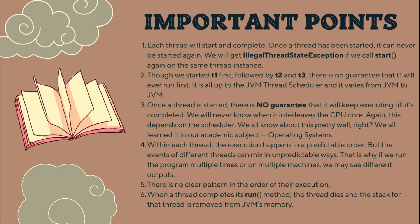Within each thread the execution happens in a predictable order, but the events of different threads can mix in an unpredictable way. That is why if we run the program multiple times or on multiple machines, we may see different output — there is no clear pattern in the order of their execution. When a thread completes its run method, the thread dies and the stack for that thread is removed from JVM memory.